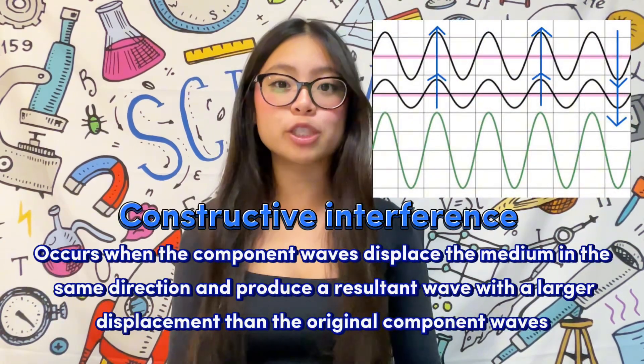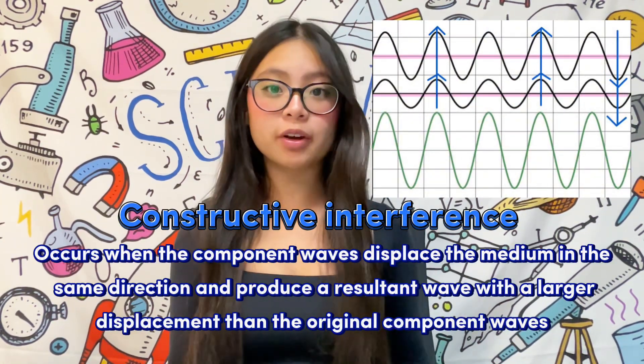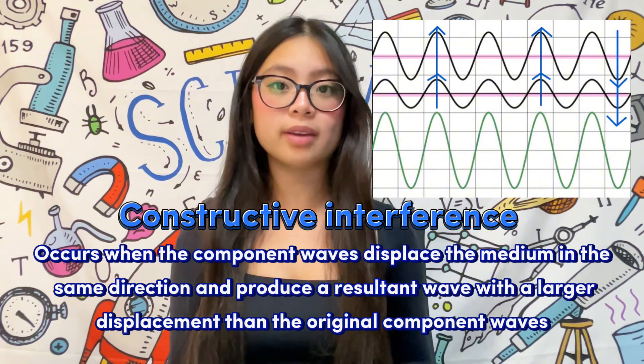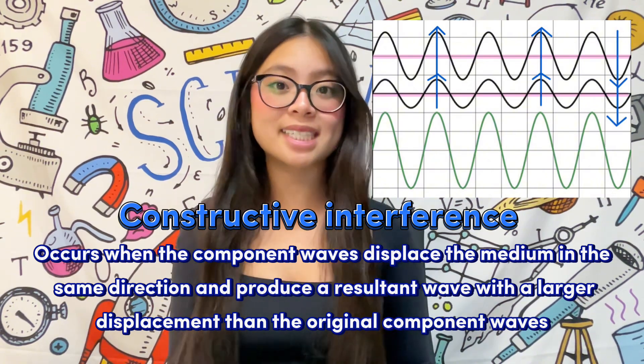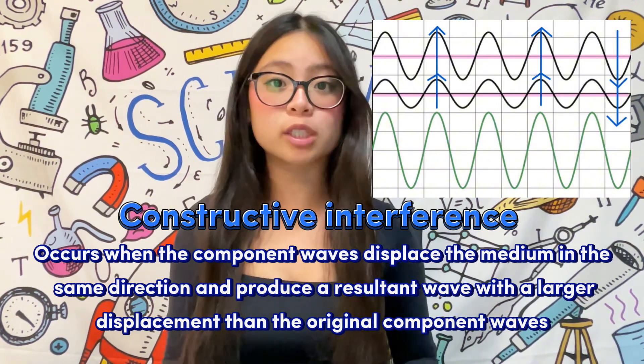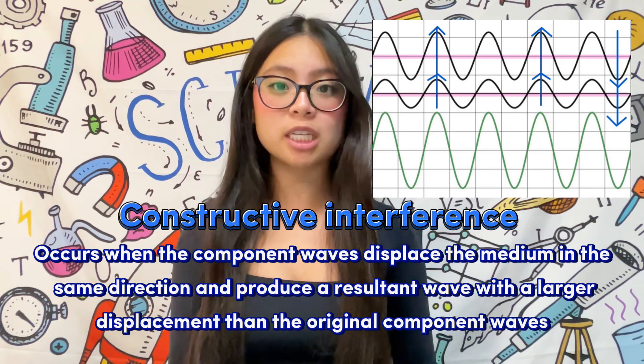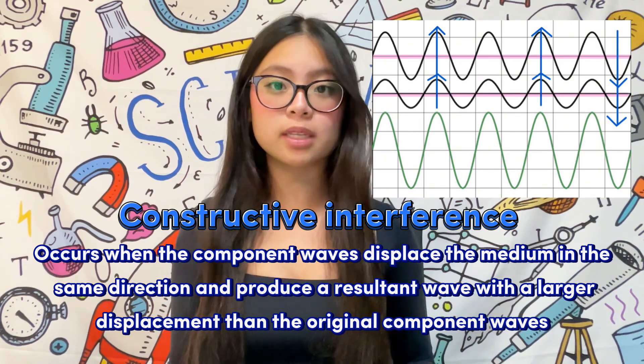So let's discuss the two different types of interference. The first type is constructive interference. Constructive interference occurs when the component waves displace the medium in the same direction, producing a resultant wave with a bigger displacement than the individual displacements of component wave.